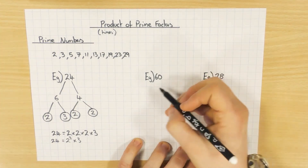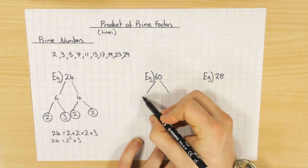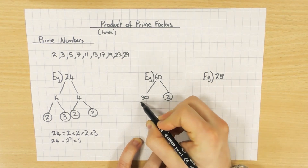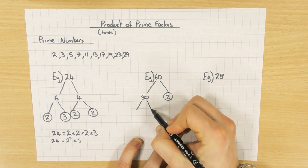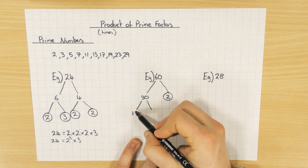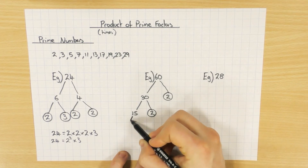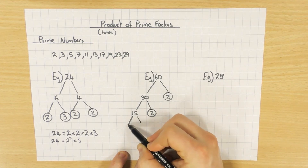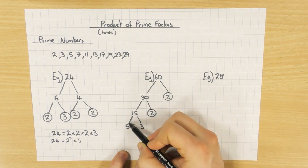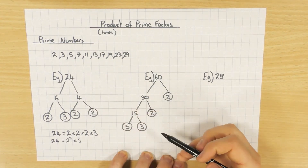Let's have a go at 60. I draw my two branches. What numbers multiply to get 60? I could have 30 and 2 — that's a nice one. 2 is prime; 30 isn't, so I draw my branches. What two numbers multiply to get 30? Let's go with 15 and 2 again. 2 is prime; 15 isn't. 5 and 3 multiply to get 15, and 5 is prime and 3 is prime — obviously it's a prime number.